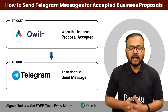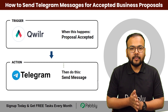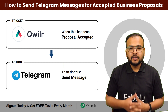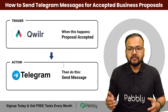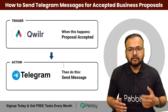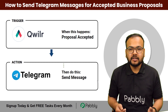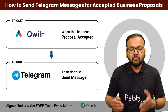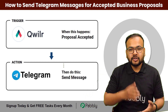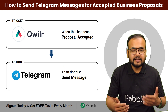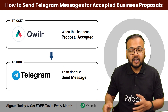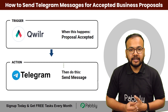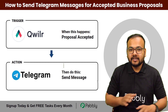In this video you will learn how you can inform your team on Telegram automatically about a business proposal getting accepted by any of your clients or customers. For creating business proposals we are using the Qwilr application, which lets you create business documents as web pages. This automation will immediately notify your team when a proposal is accepted, saving you time and improving productivity — with no coding required.